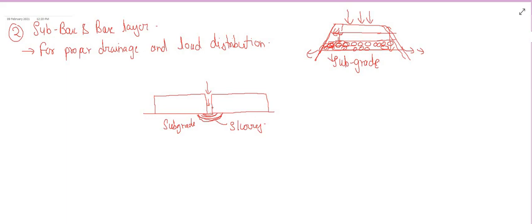When slurry forms, the supporting capacity of the soil is reduced compared to dry soil. Referring back to the compaction graph: we had compacted the subgrade to optimum moisture content for maximum dry density. But when additional water enters, moisture content increases beyond OMC and dry density starts decreasing — meaning dry density is less, and the soil's supporting capacity is less.